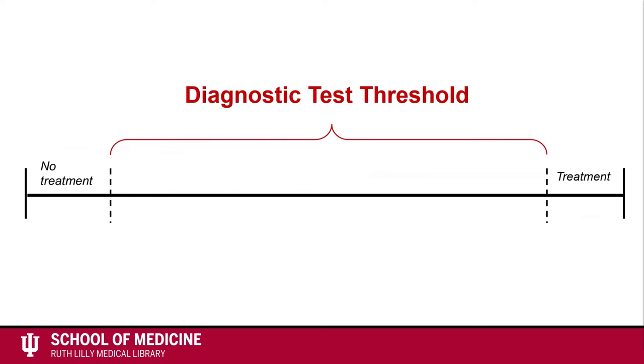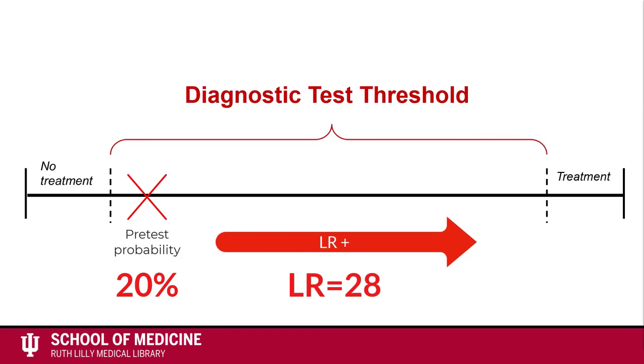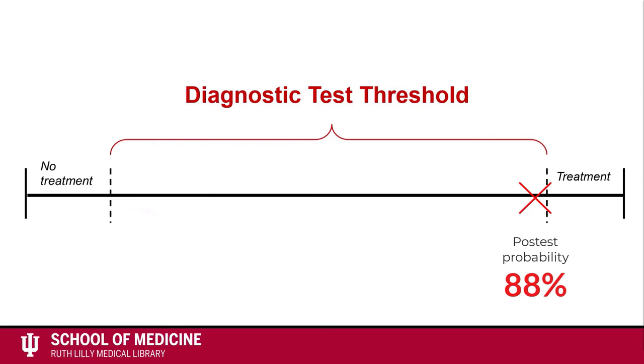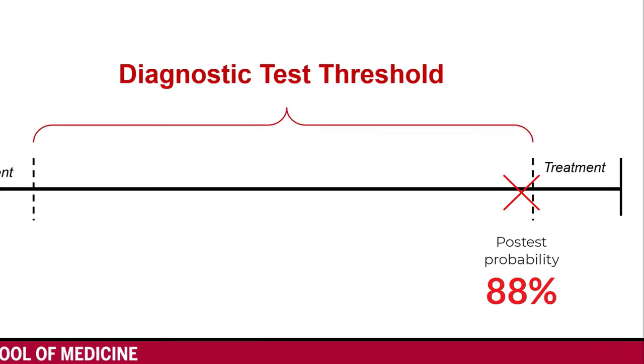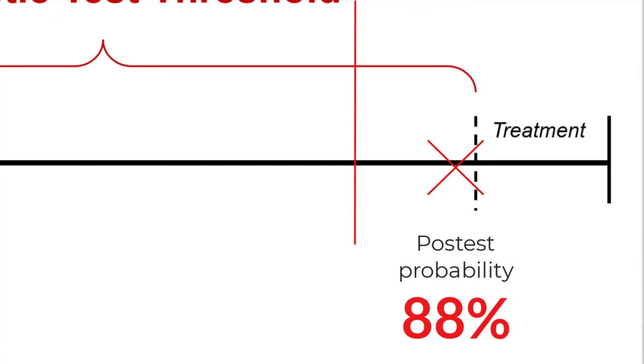Here is another way to look at this. You determined that the pre-test probability fell within your diagnostic test threshold at 20%. You then administered a diagnostic test and determined that the likelihood ratio was 28. When you used the nomogram, you saw that the post-test probability of your patient having dementia was now 88%. Whether or not you treat for dementia will depend on where your treatment threshold falls. If it extends to 88% or lower, you will likely treat the patient. If it is higher than 88%, you may administer another diagnostic test.